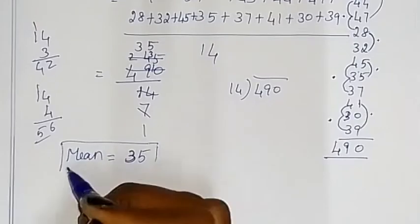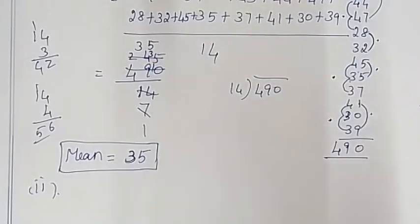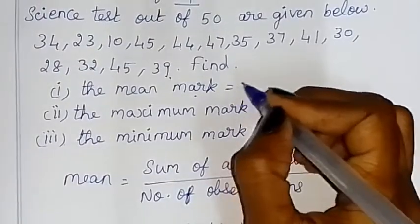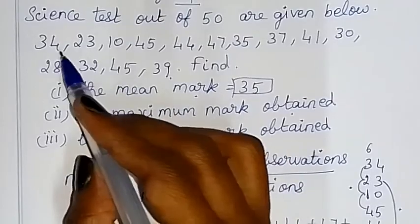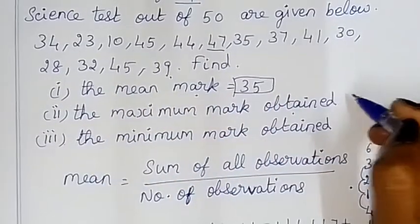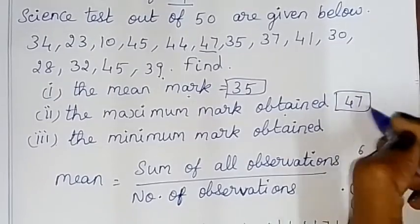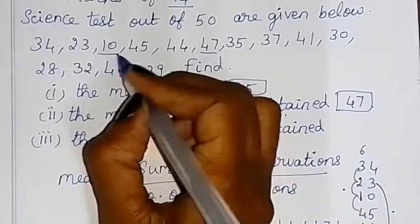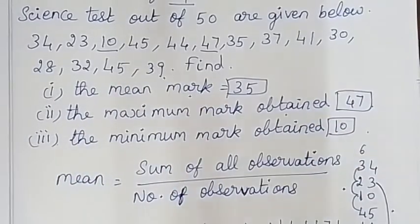So the mean mark is 35, which is the required answer for the first part. For the second part, the maximum mark is 47, and for the third part, the minimum mark is 10. That is the correct answer. Thanks for watching, children.